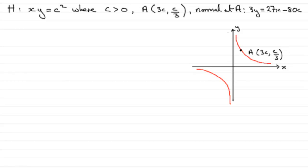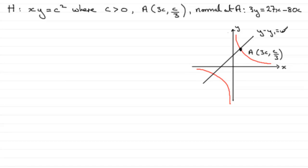We're asked to find the equation of the normal through A — if we draw it something like that, there's our normal. To get the equation of the normal, being a straight line, I'm going to use Y minus Y1 equals M bracket X minus X1. We've got our X1 and Y1 on the curve; we just need to get the gradient.